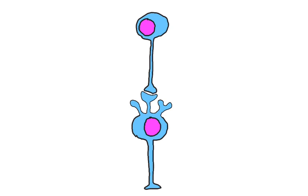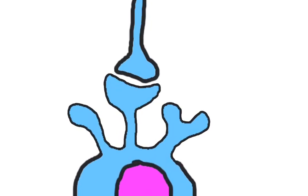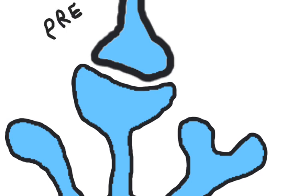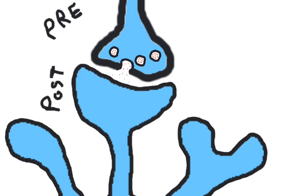Storing a memory involves strengthening the connections between neurons. Let's zoom in on this synapse here. It's likely that these synapses are already formed but are not very strong. The first, or pre-synaptic neuron, when it fires an action potential, will release a little bit of neurotransmitter onto the post-synaptic cell. Initially, this connection may not be very strong and may not trigger an action potential in the post-synaptic cell.